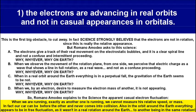Point two: when we observe the movement of the rotation plane from one side, we perceive that the electric charge is as a wave that shows a line in full rotation — as a real wave, and not as a confusion proceeding. Why? Why on earth?